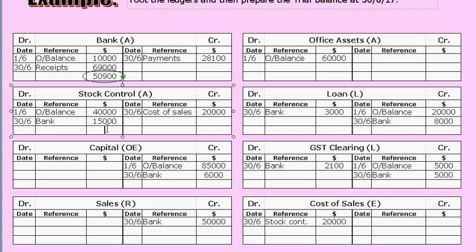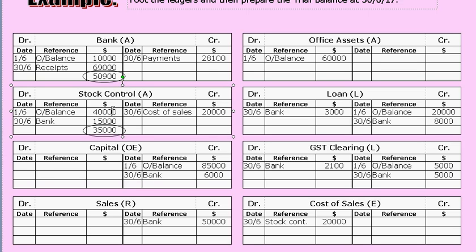For the stock control account, you add up the debits — $55,000 — and take away the credits (cost of sales), $20,000. You're left with a balance of $35,000, which represents the value of the stock at that point in time. Write that in pencil and put a little circle around it. That is the footed balance of the stock control account — the big side less the little side, with the balance of $35,000 written on the big side.